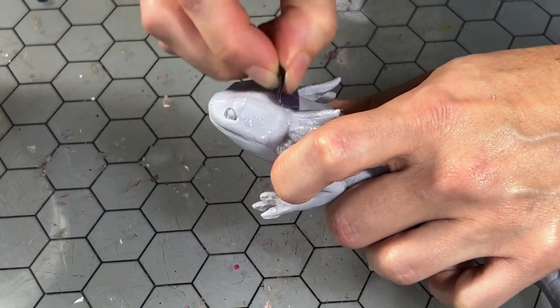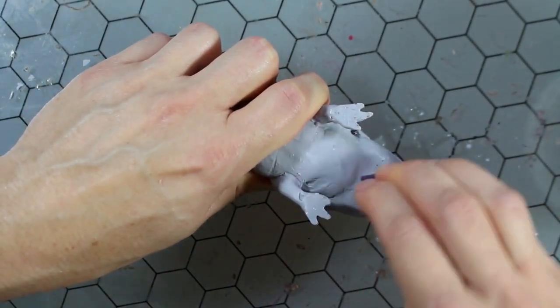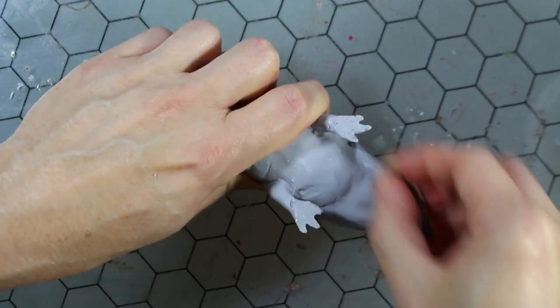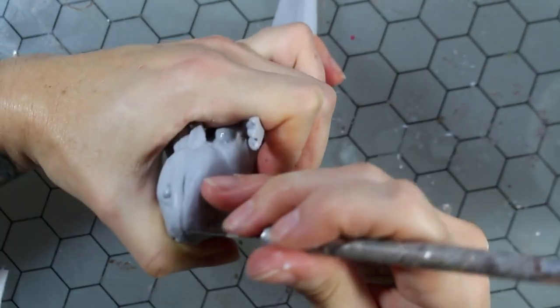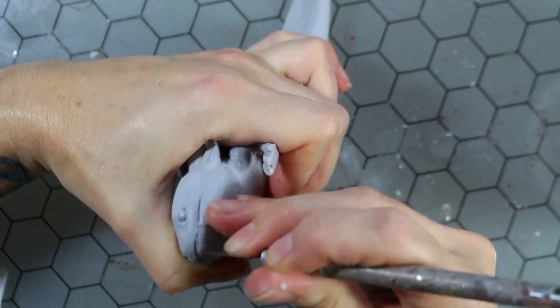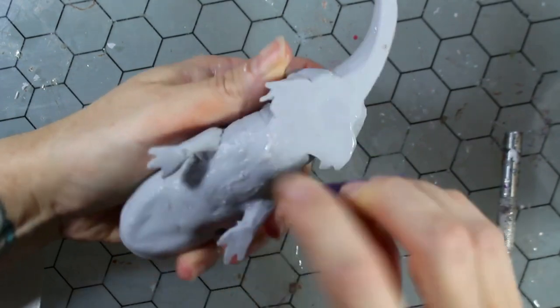So I'm going to take a lot of time and clean up the edges. Sand all the surfaces down smooth. And just make sure he's looking his best. Because how this looks is how my final casts will look.